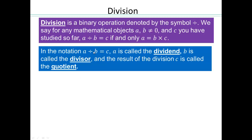In the notation a divided by b equaling c: a is called the dividend, b is called the divisor, and the result of the division — c — is called the quotient.